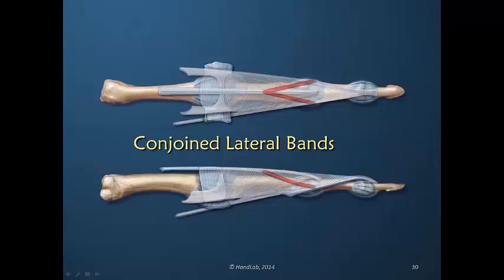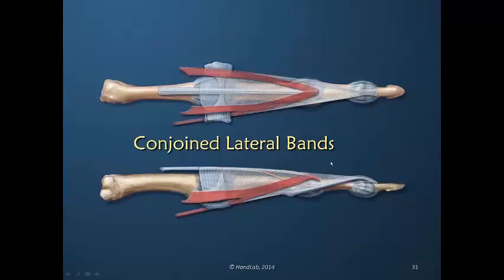The extensor digitorum communis power, as we pull on it, would be transferred via the conjoined lateral band out to the lateral band, therefore transmitting power to the terminal tendon insertion. The converse is also true: the conjoined lateral bands coming from the lateral bands join with the oblique fibers — because they are all running obliquely — and that creates a transfer of power from the lateral bands to the central slip insertion. Nothing can move very far without the adjacent structure going along, at least for the ride.